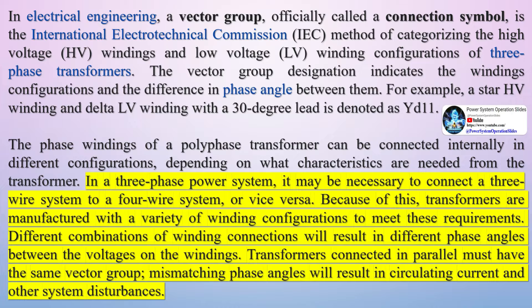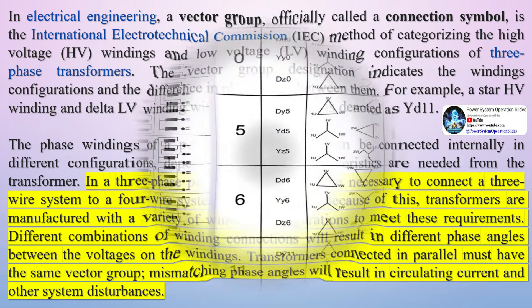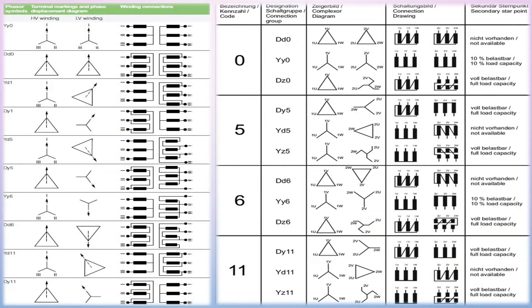Three-phase transformers consist of three sets of primary windings, one for each phase, and three sets of secondary windings wound on the same iron core.